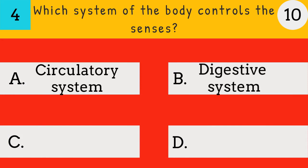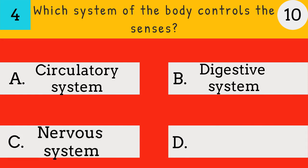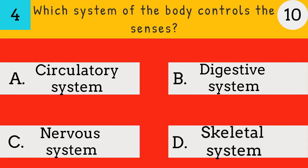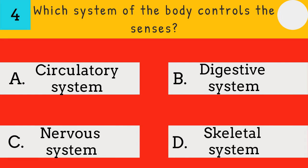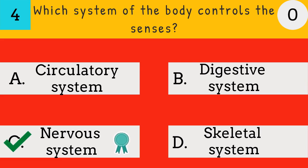Which system of the body controls the senses? Circulatory system, digestive system, nervous system, or skeletal system? The answer is the nervous system — the nervous system of the body controls the senses.